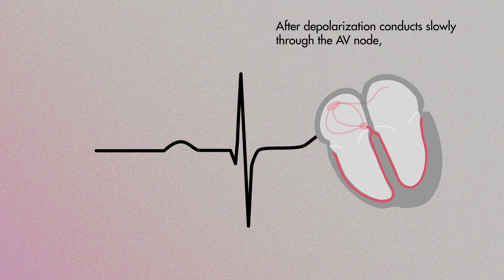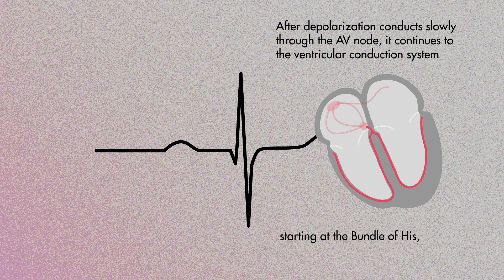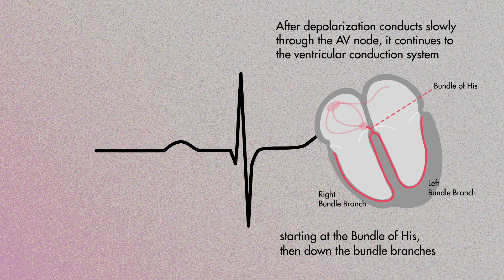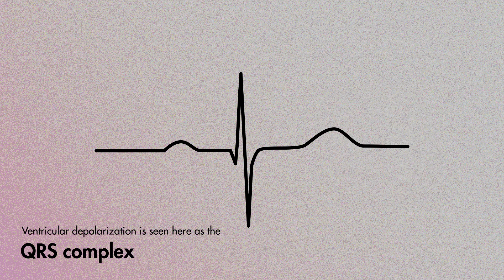After depolarization conducts slowly through the AV node, it continues to the ventricular conduction system, starting at the bundle of His, then down to the bundle branches. This ventricular depolarization is seen here as the QRS complex.